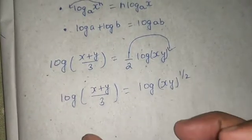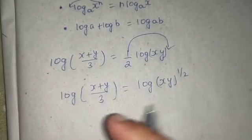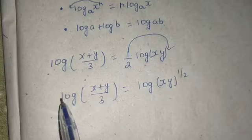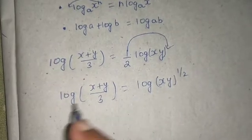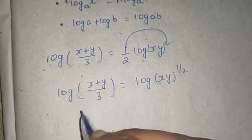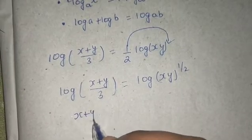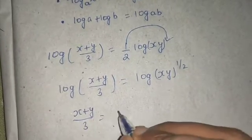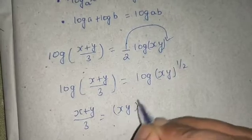Now I can remove log from both sides. No problem is there, no coefficient is there. Coefficient is one on both the sides. So I can remove log from both the sides. So on removing log, I will get (x+y)/3 being equal to (xy)^(1/2).